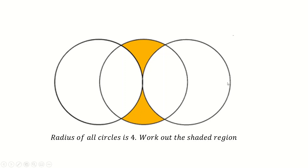I ran into this random circle problem - I don't remember where I saw it, and I doubt anyone watching has seen it before. The question involves three identical circles, each with radius four, and you're supposed to work out the shaded region.